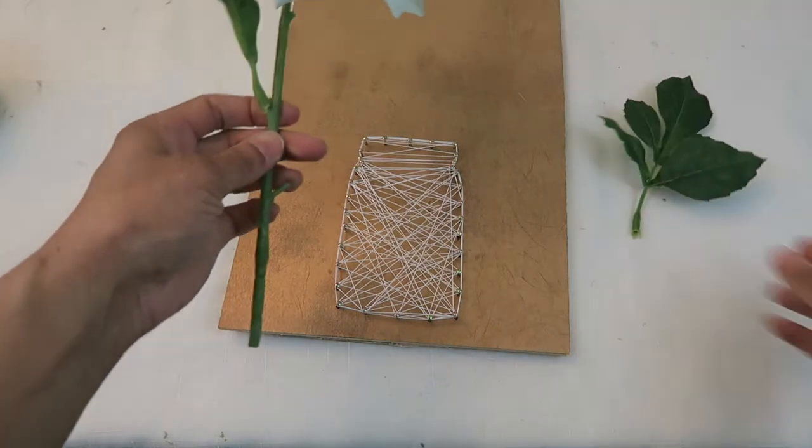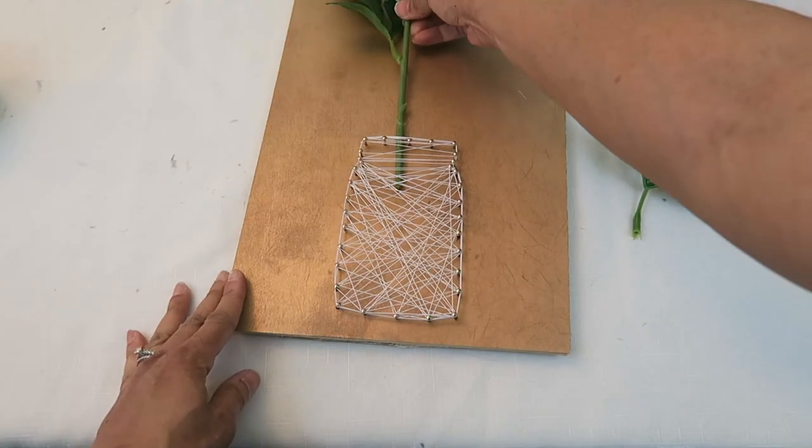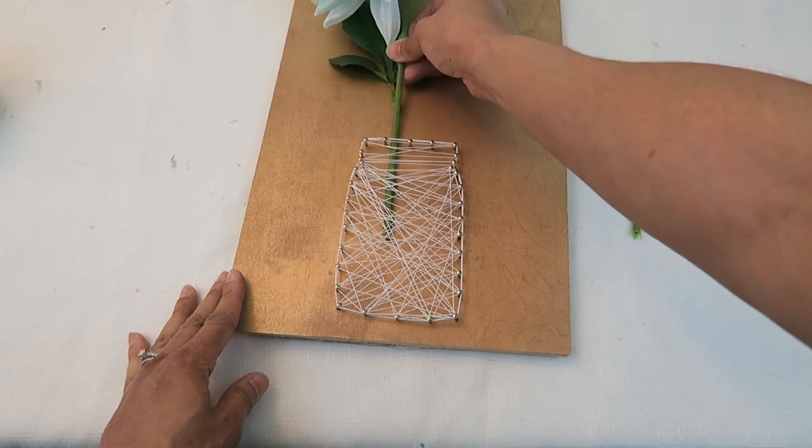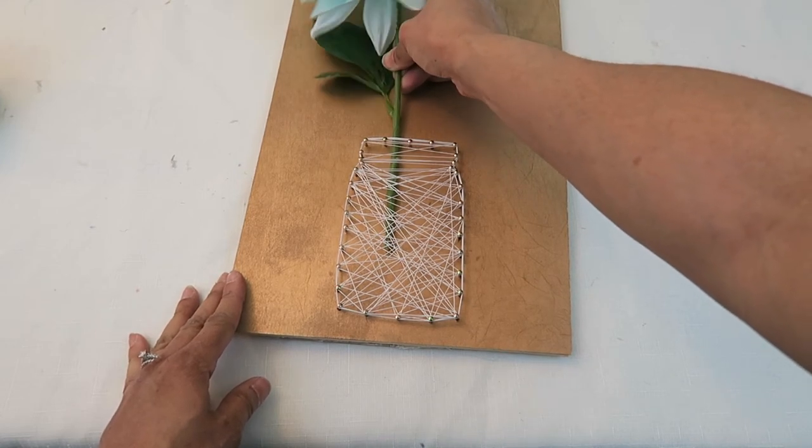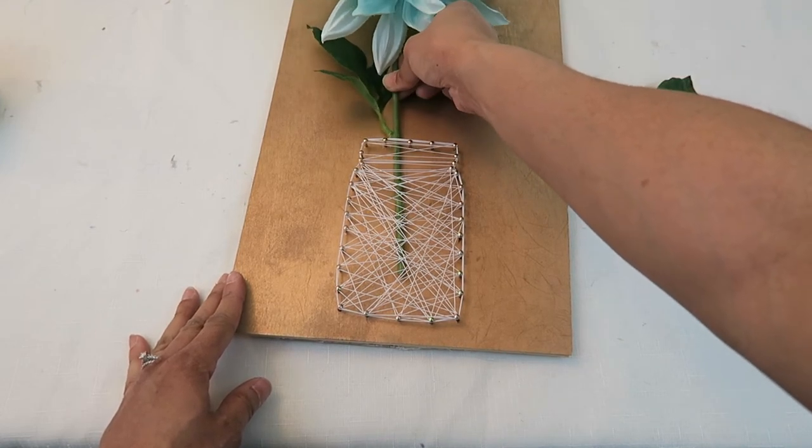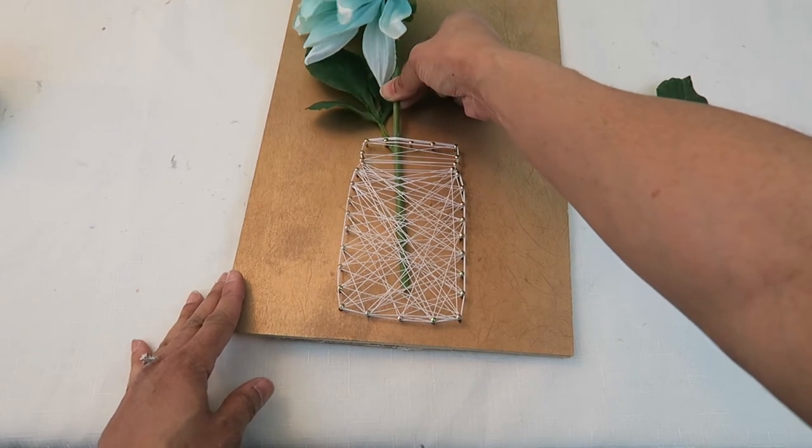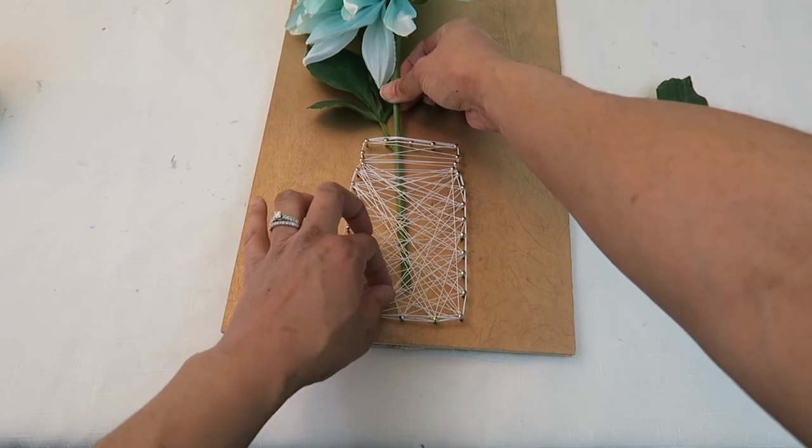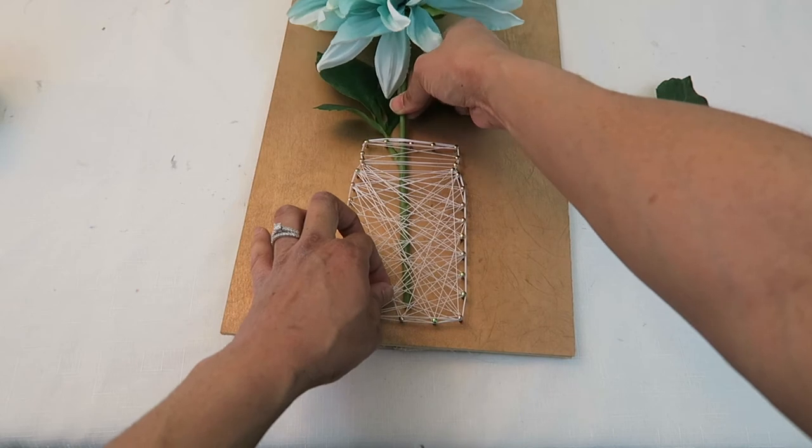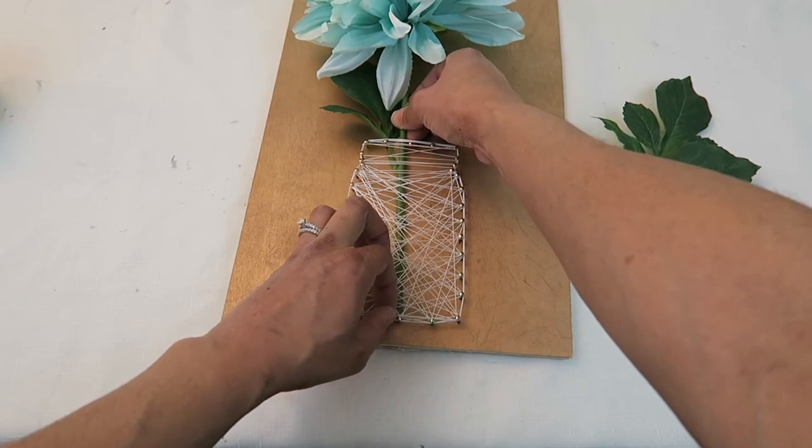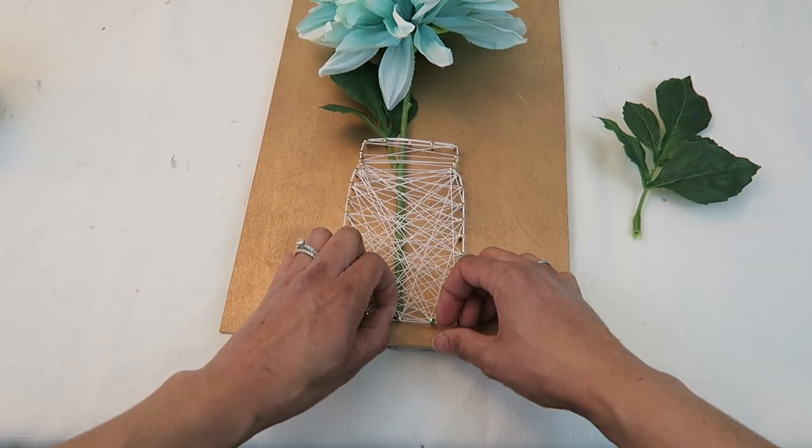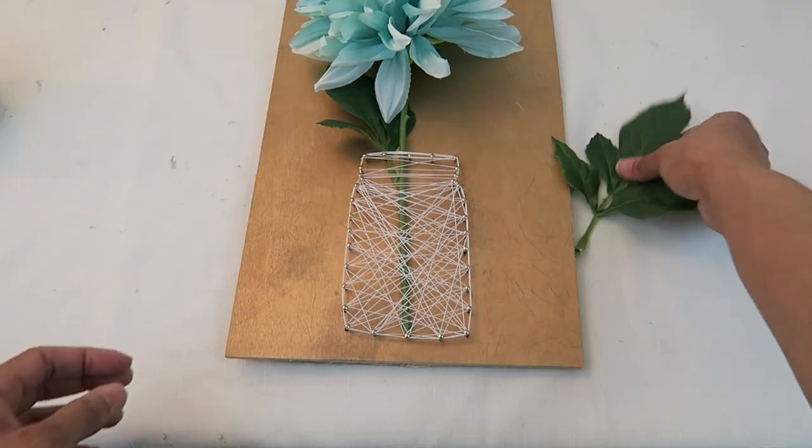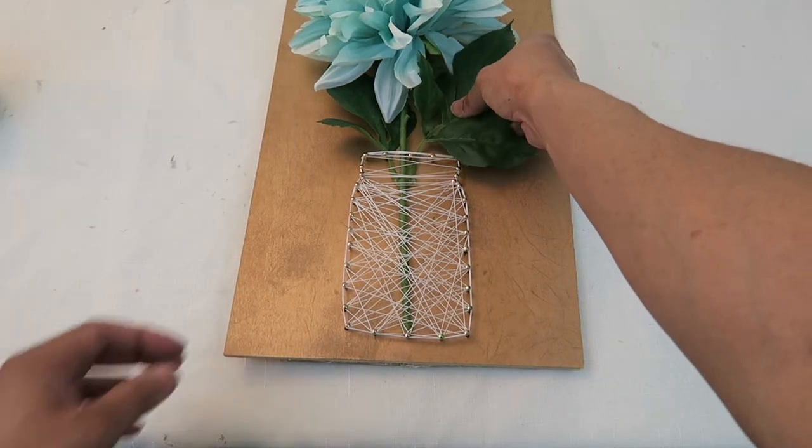I removed the stem and then slid the flower down under the strings. And then I added the stem back on and glued it in place.